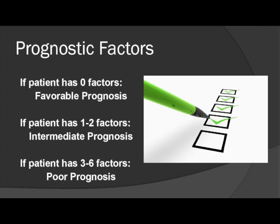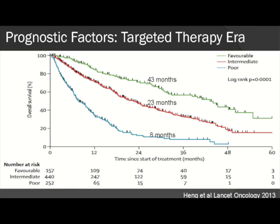Patients with zero risk factors are in the favorable risk group; one or two factors place them in the intermediate risk group; three to six factors place them in the poor risk group. We externally validated this in another thousand patients in the targeted therapy era. Favorable risk was 43 months, intermediate 23 months, and poor risk 8 months — all improved from the pre-targeted therapy era, where those figures were approximately 37, 17, and 4 months respectively. This is a testament to the efficacy of targeted therapy.